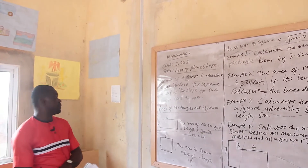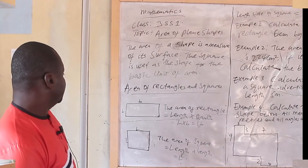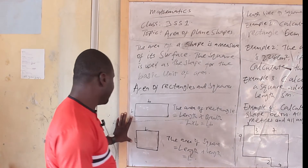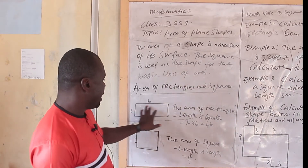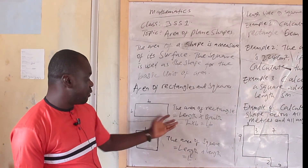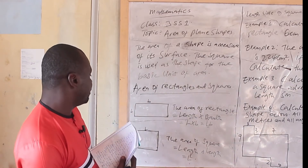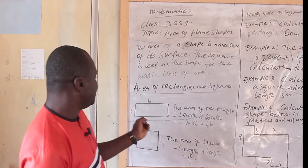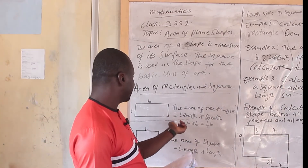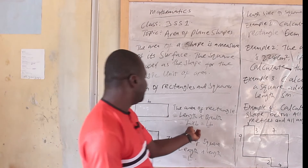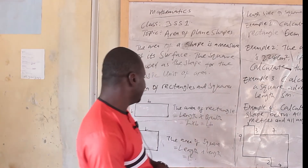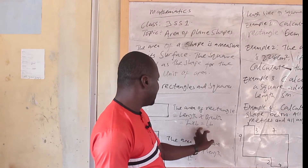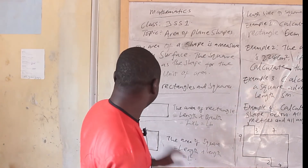So let us go to the area of a rectangle and a square. The diagram on the board is just a sketch of a rectangle and a square. The area of a rectangle, when we want to get it, is length times breadth. If we use L for length and B for breadth, that means area equals L multiplied by B, which is LB.